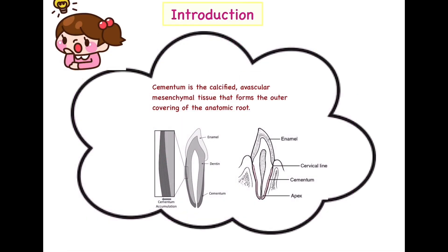Coming to the introduction, cementum is defined as a calcified avascular tissue which is derived from mesenchymal cells that forms the outer covering of the anatomical root. The anatomical root is not visible in the oral cavity, and cementum basically forms a protective layer around that root so that we don't experience sensitivity. It is avascular, meaning it does not have its own blood supply, and this is the only tissue in the oral cavity which is avascular.